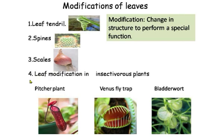The fourth modification is found in insectivorous plants. Your book covers three insectivorous plants: the pitcher plant, Venus fly trap, and bladder wort. In the pitcher plant, the leaf changes its structure like a pitcher. When a fly or insect goes inside, it cannot come out because the inner surface is very sticky. The insect is trapped and digested, and the plant absorbs the nutrients.